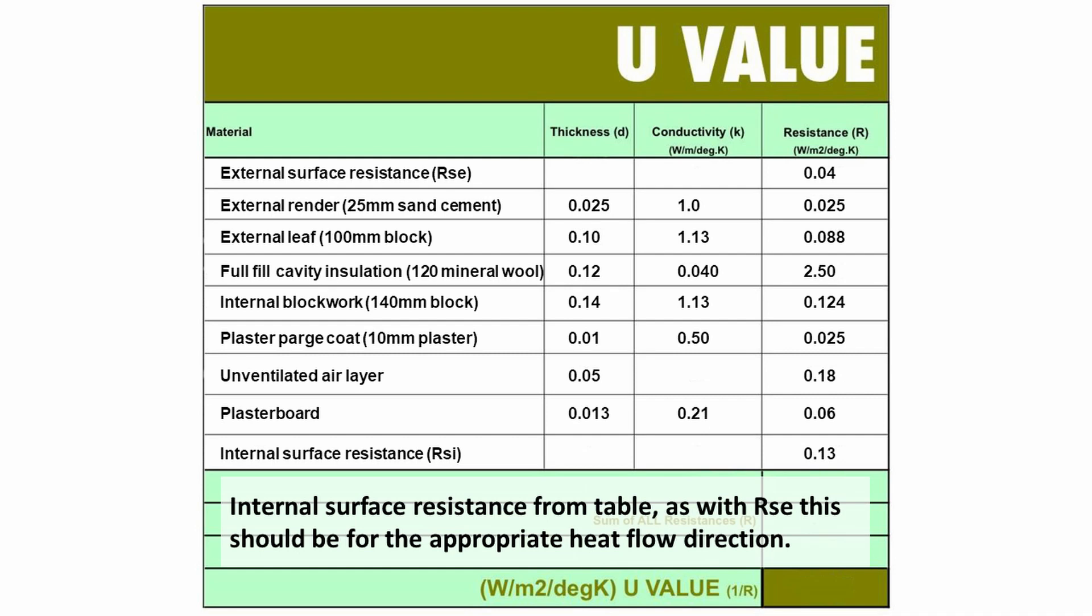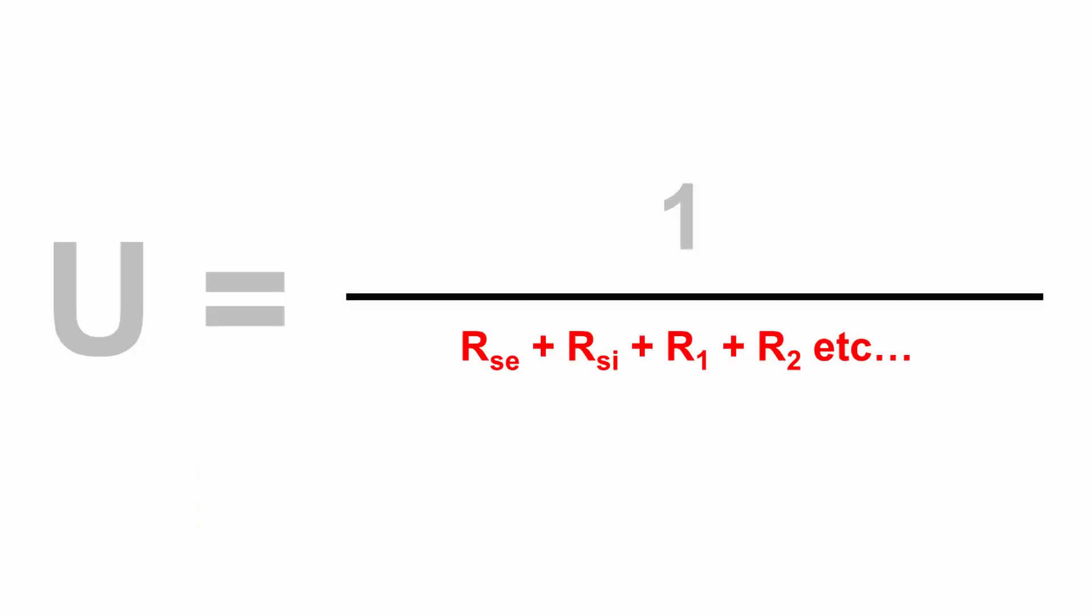So that gives us all of our resistances. We can then go to our U-value calculation, which is U equals 1 over the sum of all the resistances, which gives us a calculation which looks something like that. And if we perform that calculation, we get 1 over 3.532.